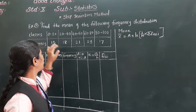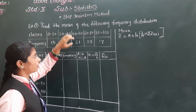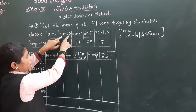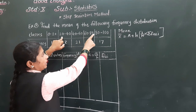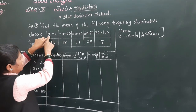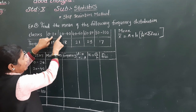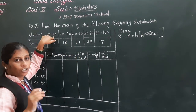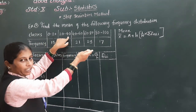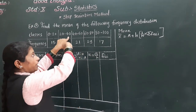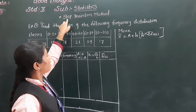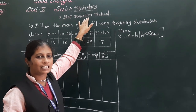Last time we learnt examples where direct xr values were given. Today here classes are given: 0 to 20, 20 to 40, 40 to 60, 60 to 80, and 80 to 100. We need to check whether the classes are continuous. Here 0 to 20 and immediately 20 to 40 means all classes are in a continuous group. Sometimes classes come like 0 to 20, then 21 to 40 — that would be discontinuous. For the step deviation method, there is no need to make discontinuous classes continuous.